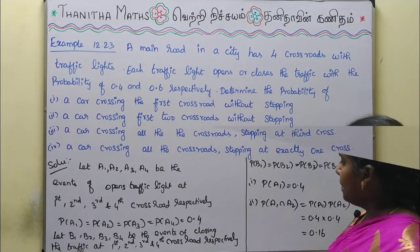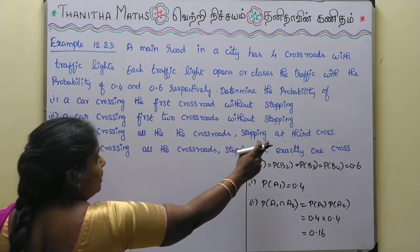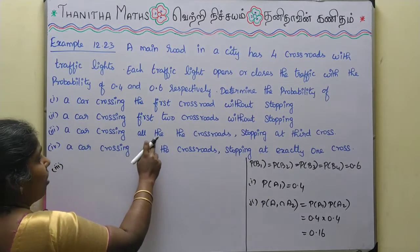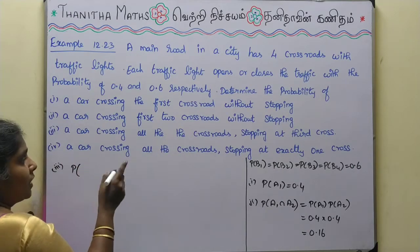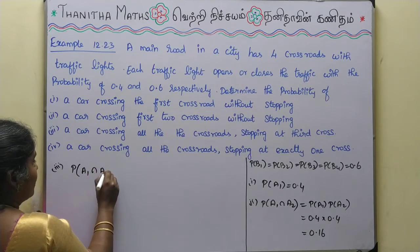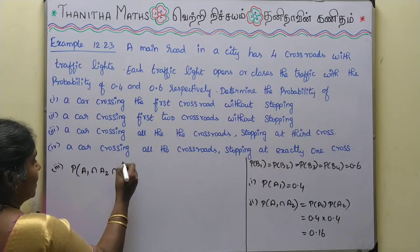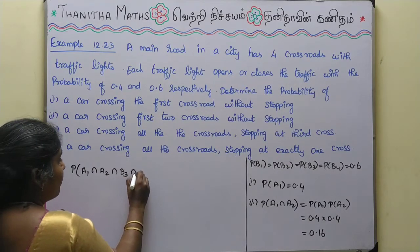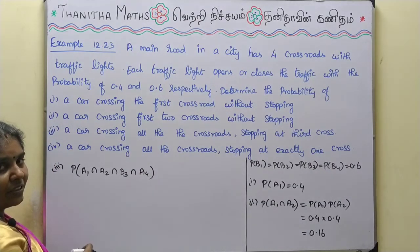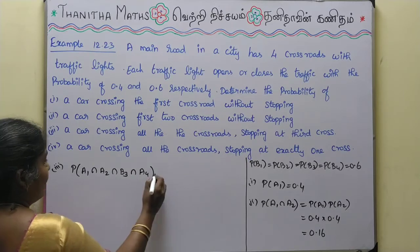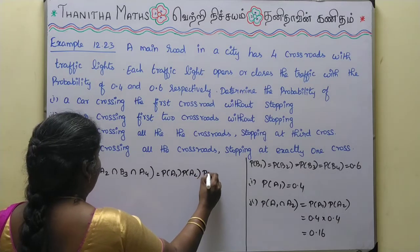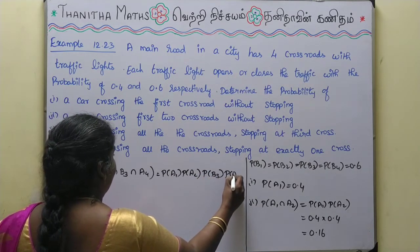For the 3rd question — a car crossing all crossroads stopping only at the 3rd — the 1st crossroad is open (A1), the 2nd crossroad is open (A2), the 3rd crossroad is closed (B3), and the 4th crossroad is open (A4). So the required event is A1 ∩ A2 ∩ B3 ∩ A4.